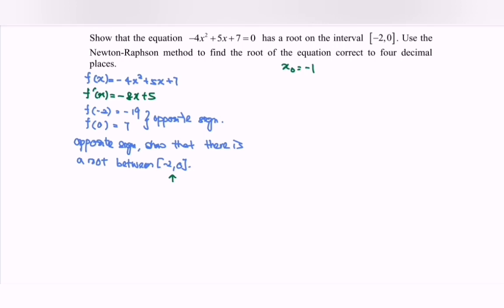So substitute, we have x₁ which is equal to -1 minus, we have the bracket. So -4(-1)² + 5(-1) + 7 over -8(-1) + 5. x₁, which is equal to, by referring to the calculator, -0.84615384.